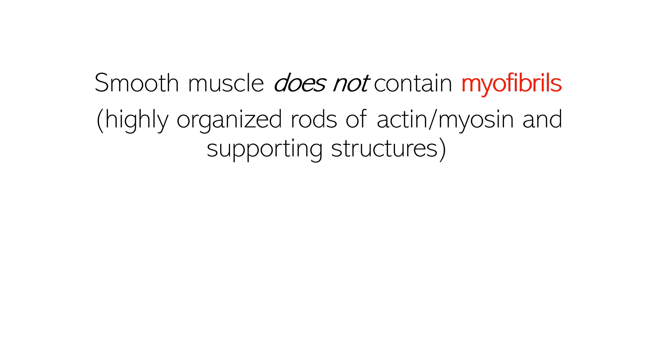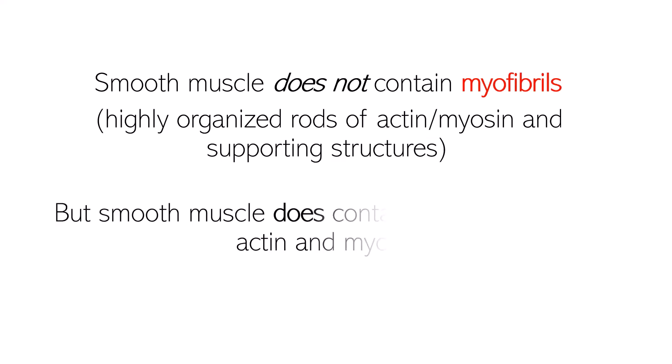While smooth muscle would not contain myofibrils, it still contains myofilaments, because actin and myosin — the myofilaments — are the contractile proteins. Without them, the muscle would not be able to contract.